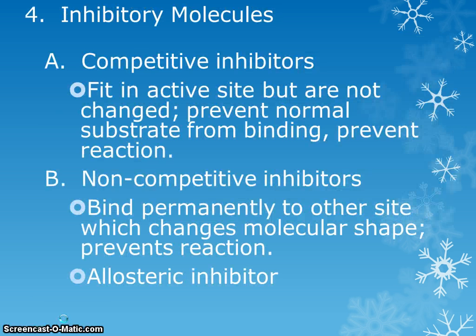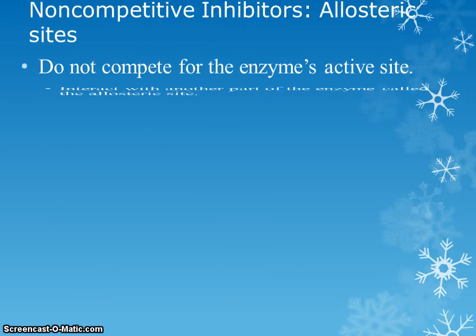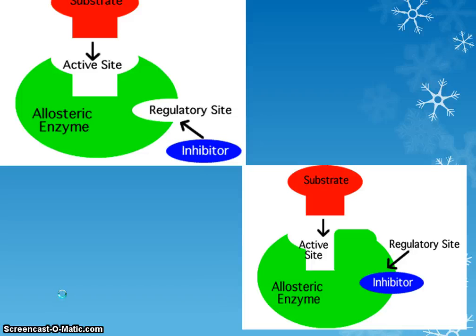The other type is called a non-competitive inhibitor — sometimes called an allosteric inhibitor. This does not compete for the active site. Instead, it tries to bind somewhere else on the enzyme, called the regulatory site or allosteric site. Once it binds there, it causes the whole enzyme to change shape.